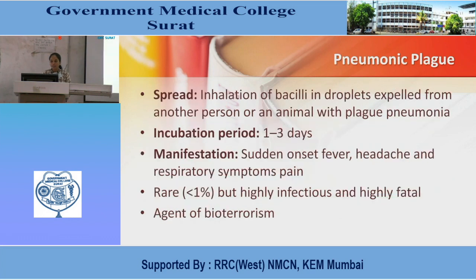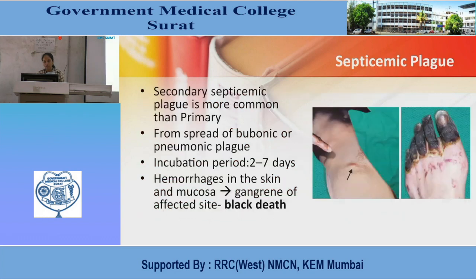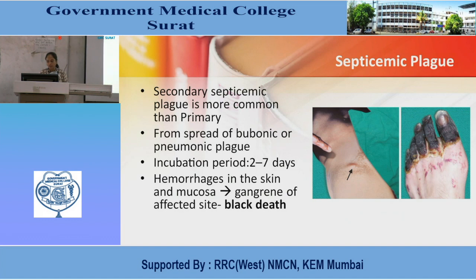Pneumonic plague spreads through inhalation of bacilli in droplets expelled from a person or animal with plague pneumonia. Incubation period is 1–3 days. Manifestation is sudden onset of fever, headache, and respiratory symptoms. It is rare — less than 1% — but highly infectious and highly fatal. Pneumonic plague is considered an agent of bioterrorism. Septicemic plague: secondary septicemic plague is more common than primary, arising from spread of bubonic or pneumonic plague. Incubation period is 2–7 days. Hemorrhage in skin and mucosa, gangrene of affected sites — the 'black death' — may occur.